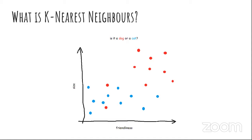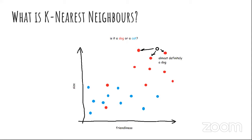My friend calls me — there's some kind of animal in his kitchen and he doesn't know if it's a cat or a dog. So I ask how big the animal is and how friendly, ideally as a z-score compared to a normally distributed set of other animals. He tells me it's pretty small and not very friendly. I've drawn this mystery animal on my graph — the white dot in the bottom left. Looking at the distance between the mystery animal and the four nearest neighbors, I can see three cats and one dog. So I tell my friend it's probably a cat, maybe a small dog. But then he says there's another animal — really big and really friendly. It even brought beer.